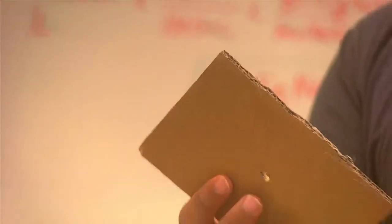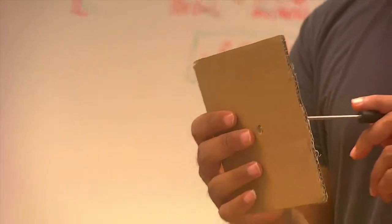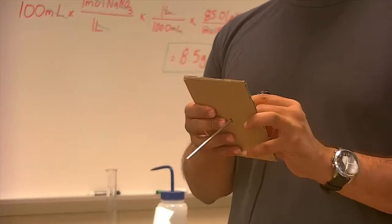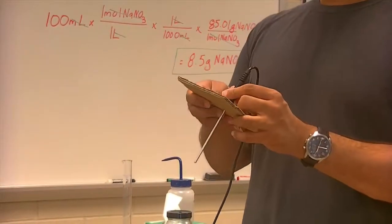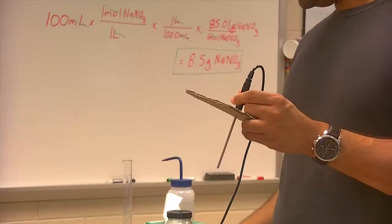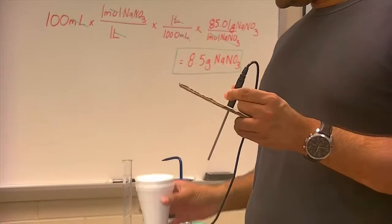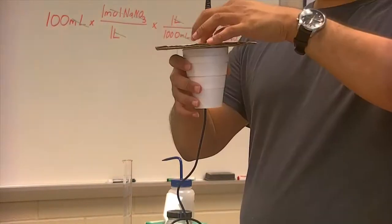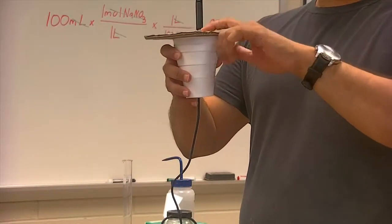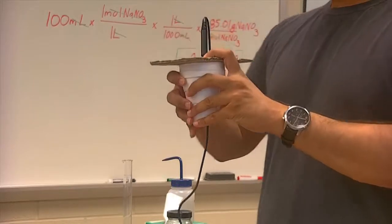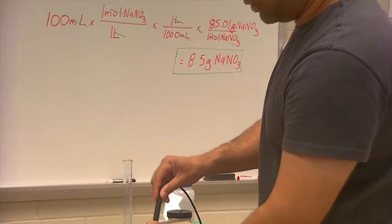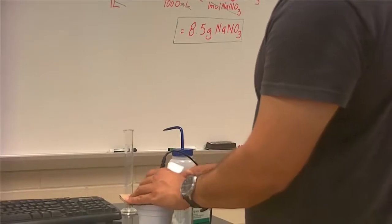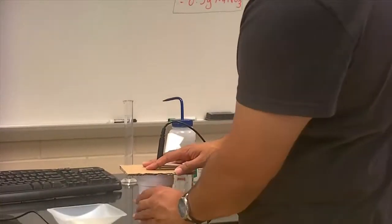We have our temperature probe and our little cardboard square that will serve as your lid. Before I add anything, I'm just going to put the probe through the lid — that is going to be my calorimeter. You may want to get your partner to help hold this straight; leave it on the bench.